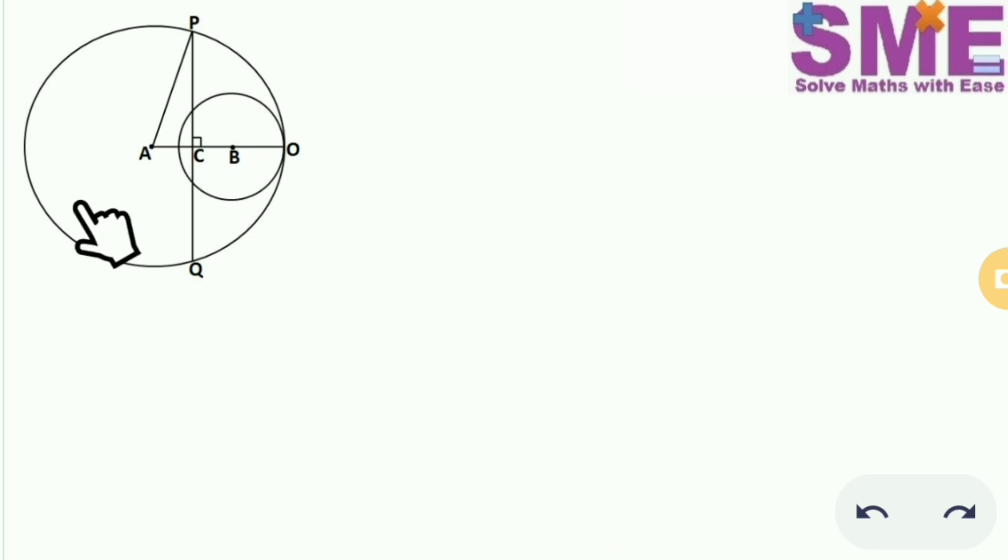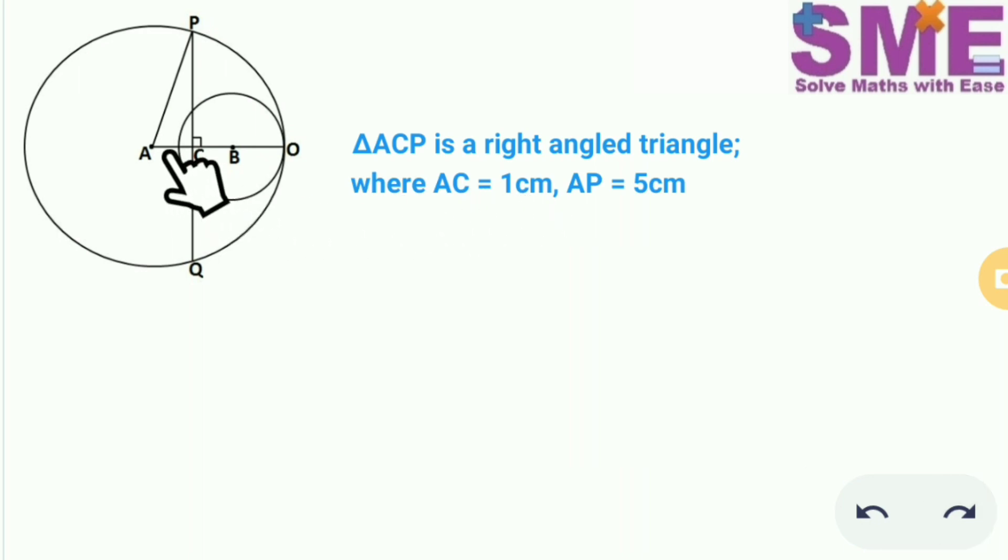Now we will join this point A with point P such that ACP becomes a triangle. Triangle ACP is a right angle triangle because angle ACP is a 90 degree angle, where AC is equal to 1 cm and AP will be the radius of the outer circle which is 5 cm.